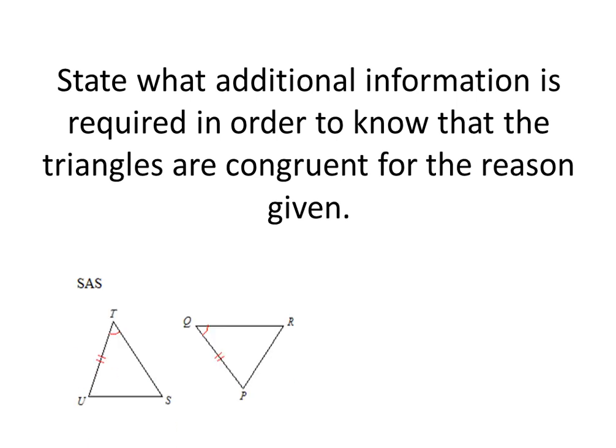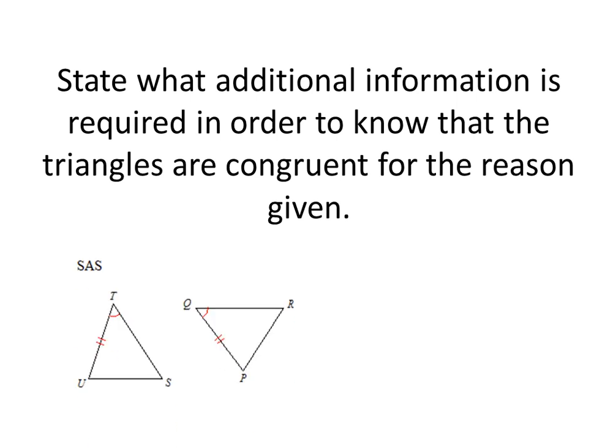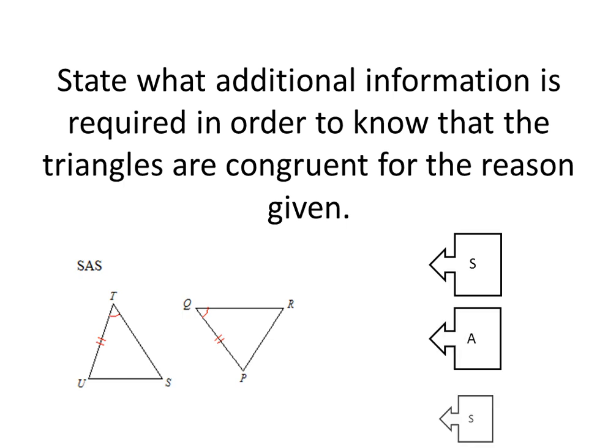Now we're going to explore side-angle-side with these two triangles. We need a side, an angle, and a side. The first thing we have is a side: TU is congruent to QP, as labeled by our hash marks. Then we already have an angle: angle T is congruent to angle Q.